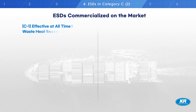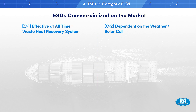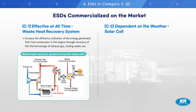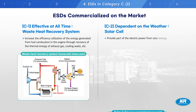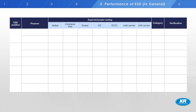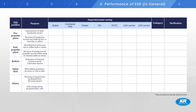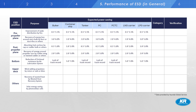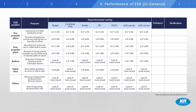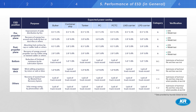Examples of Category C ESDs commercialized on the market are waste heat recovery systems and solar cells. A waste heat recovery system generates additional power from wasted thermal energy, such as exhaust gas and cooling water. Solar cells also make additional electric power from solar energy. This table shows the general performance of ESDs, provided by Hyundai Global Service, classified by the position where the ESD will be installed and ship types. It should be noted that the power saving ratios shown in these tables are not guaranteed by a classification society, and the performance of each ESD should be verified through an appropriate verification method.